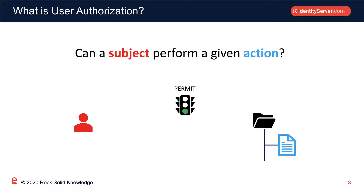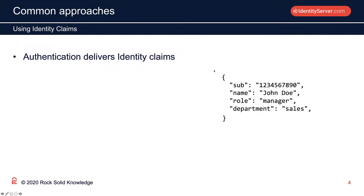So now we're clear on what we mean by user authorization, we'll now move on to some techniques. One common approach used by developers is to leverage identity claims. So what are identity claims? Identity claims are information or attributes about a user that get delivered post authentication. So once a user has been successfully authenticated, the authentication subsystem may deliver a set of identity claims — additional attributes about the user that applications can use to make decisions.